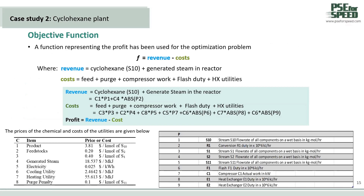To optimize, we need to set the objective function. In this example, for the cost estimation, we use profit as the objective function, where profit equals revenue minus cost. The revenue is the cyclohexane price plus the generated steam from the reactor. The cost includes the feed, the purge, the compressor work, the flash duty, and the heat exchanger utility. The price of chemicals and cost of utilities are given in the table on the left, and the parameters required for the objective function are given in the table on the bottom right.